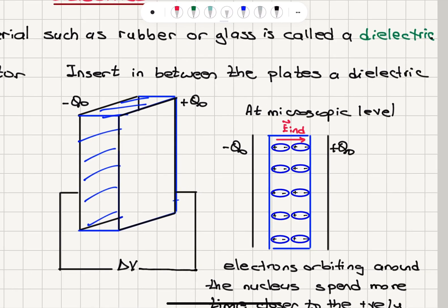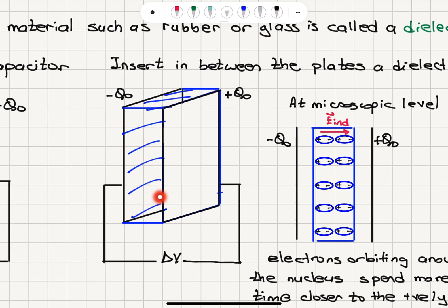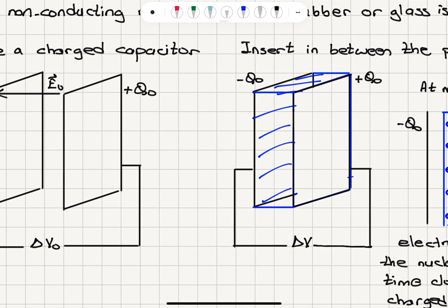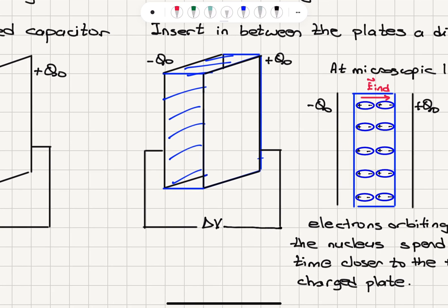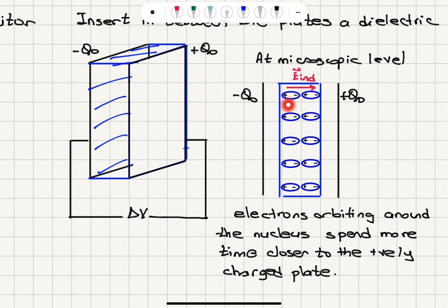We insert between the plates a dielectric material — a non-conducting material such as rubber or glass — and now the space between the two metal plates is filled with this material. At the microscopic level, because there is an electric field pointing from right to left, the molecules would get polarized so that the electrons spend more time closer to the plate that has positive charge.